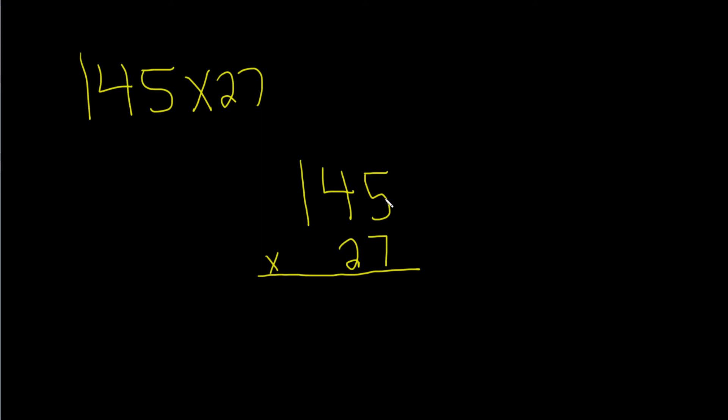Notice how it's all lined up. The 5 is above the 7, the 4 is above the 2. We line up the place values, the ones place and the tens place.